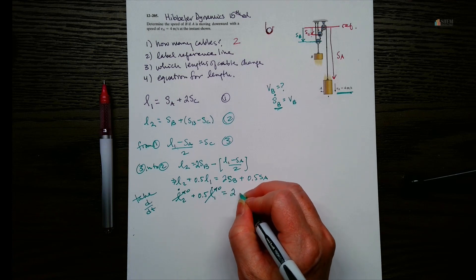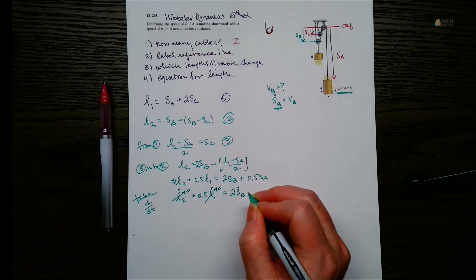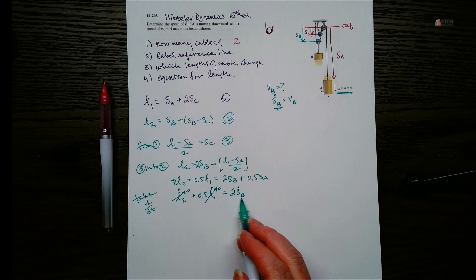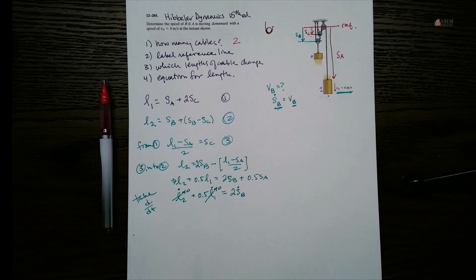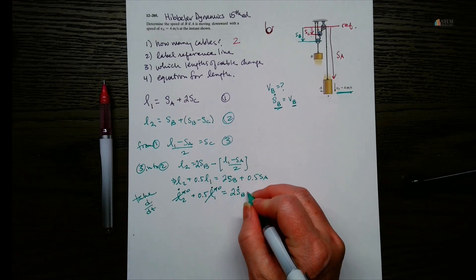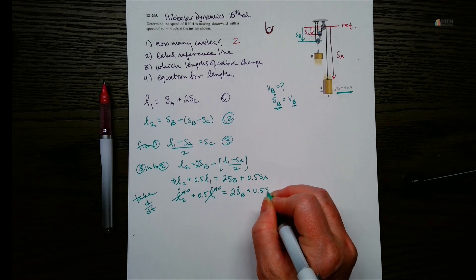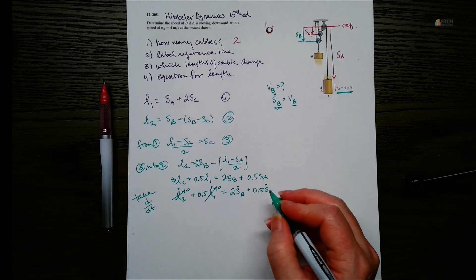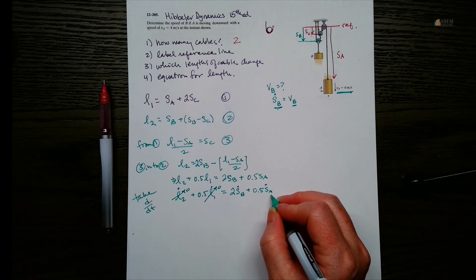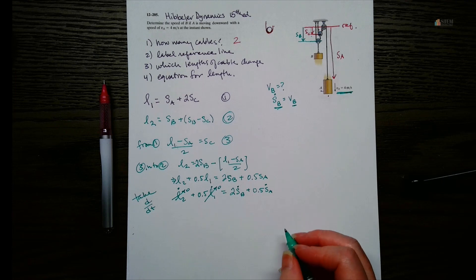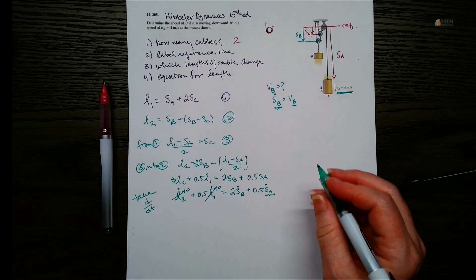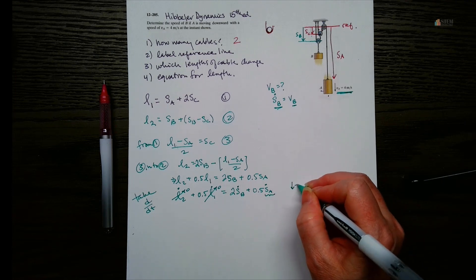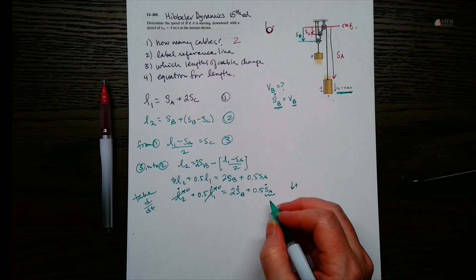Okay, so that's going to equal 2 times SB dot. Right? There's that SB dot, which is velocity. That's what we're wanting. And then we're going to have plus 0.5 SA dot. Okay. Now this SA dot, can we plug anything in for that? We can, right? It's that 4. And we're going to assume that down is positive since that's the motion here. So we're going to put in a positive 4.